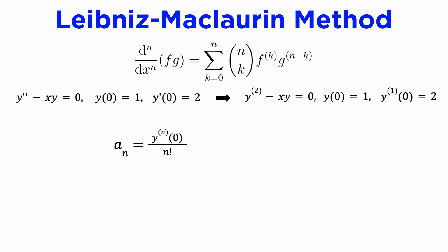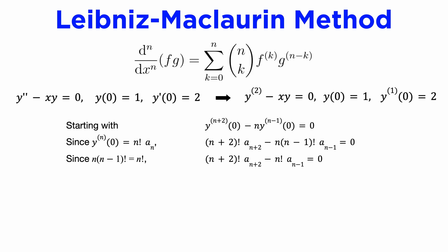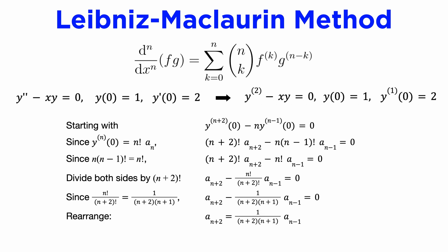Recall again from the definition of the Maclaurin series that our desired coefficients, a_n, are equal to the nth derivative of y evaluated at zero divided by n factorial, which we will rearrange for the derivatives of y at zero. We can now use this formula to convert our current equation, which is in terms of the derivatives of y at zero, into an equation relating the unknown power series coefficients a_n. We can replace n times (n minus 1) factorial with n factorial, divide both sides by (n+2) factorial, simplify the factorial fraction, and rearrange for a_(n+2).